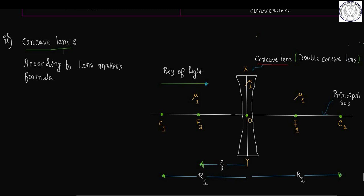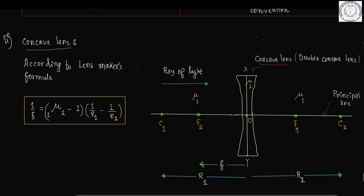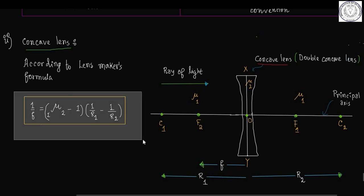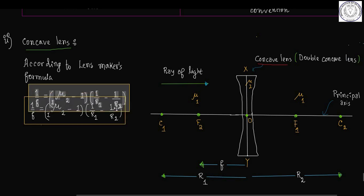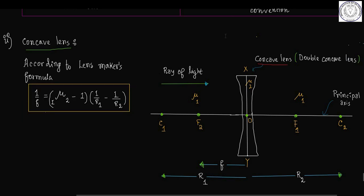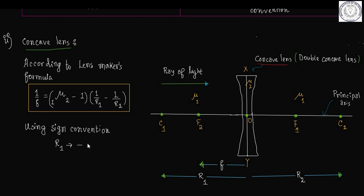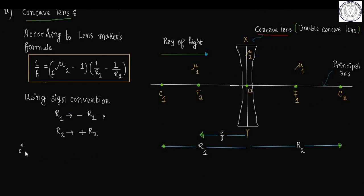Now, if we consider a concave lens, according to the Lensmaker's formula we have 1 by f equal to mu2 minus 1 into 1 by R1 minus 1 by R2. Using sign convention, the radius of curvature of the first refracting surface R1 tends to minus R1, and R2 tends to plus R2.